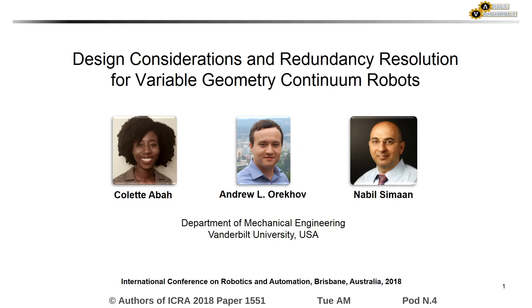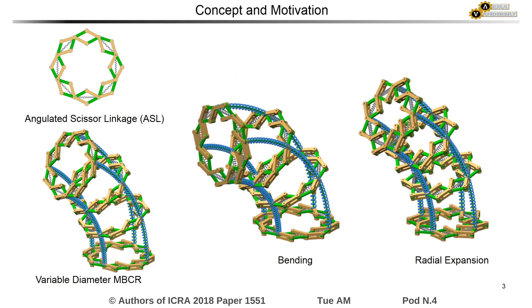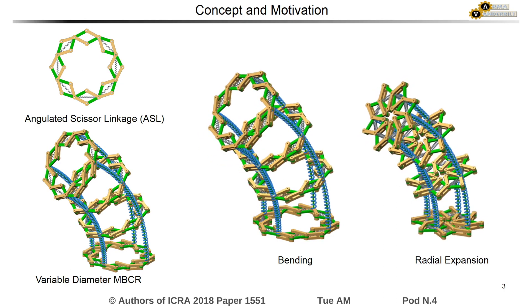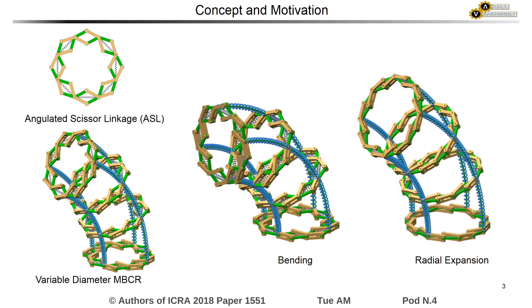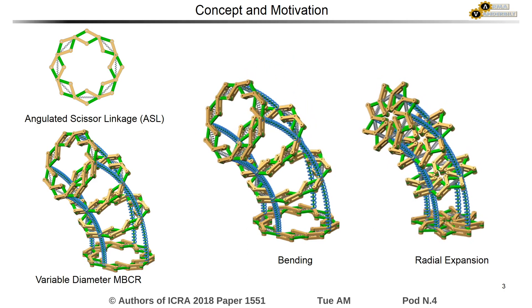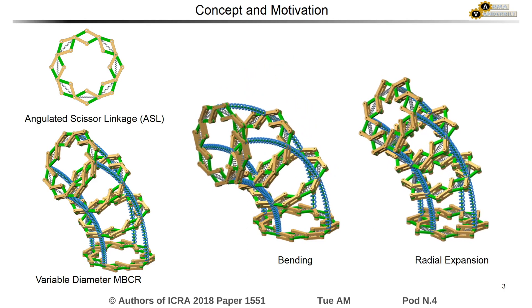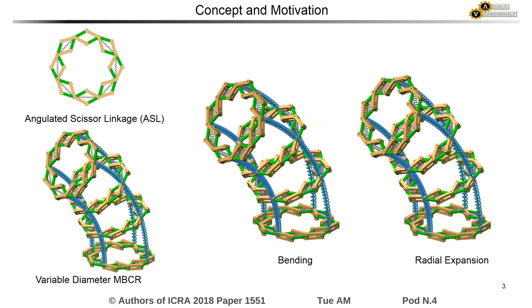This paper presents the design considerations and redundancy resolution for variable geometry continuum robots. The multi-backbone continuum robot featured in this paper is able to control its diameter actively. This is achieved by the use of angulated scissor linkages as spacer disks.